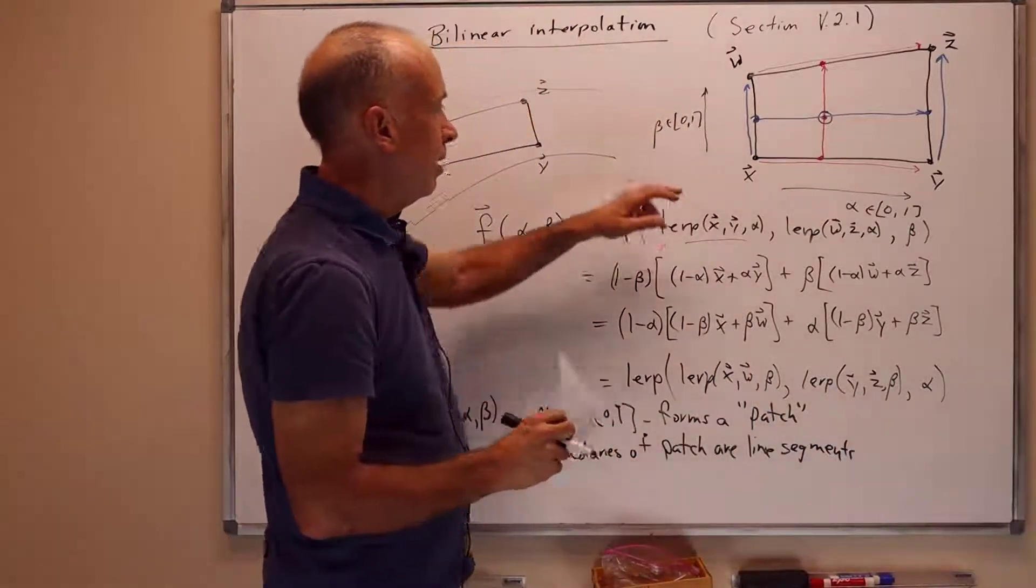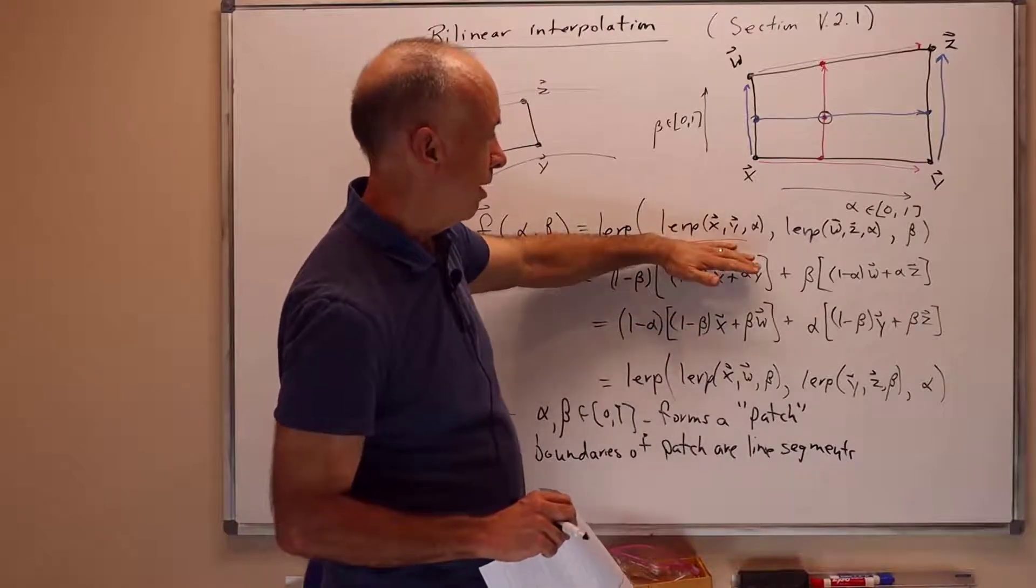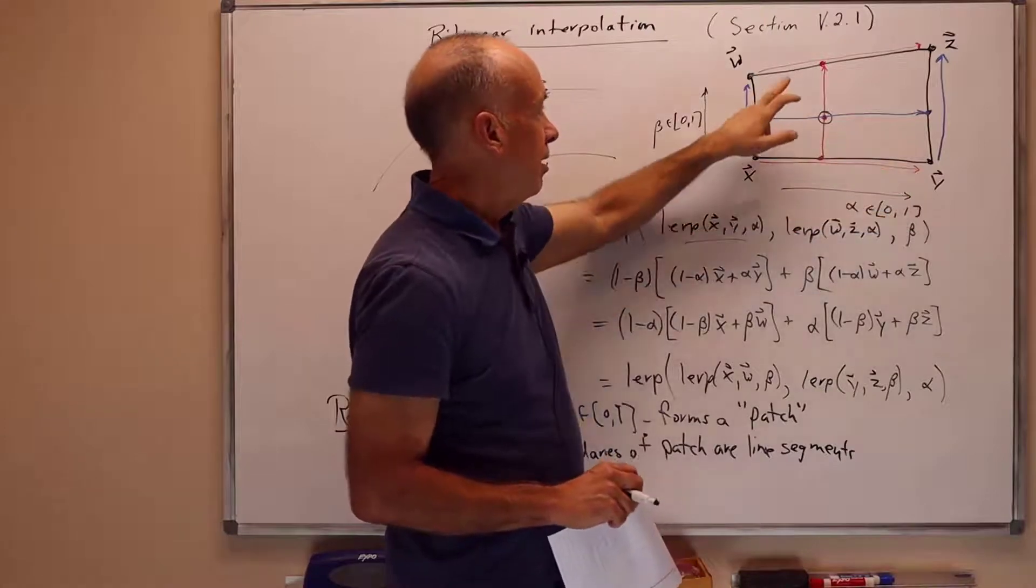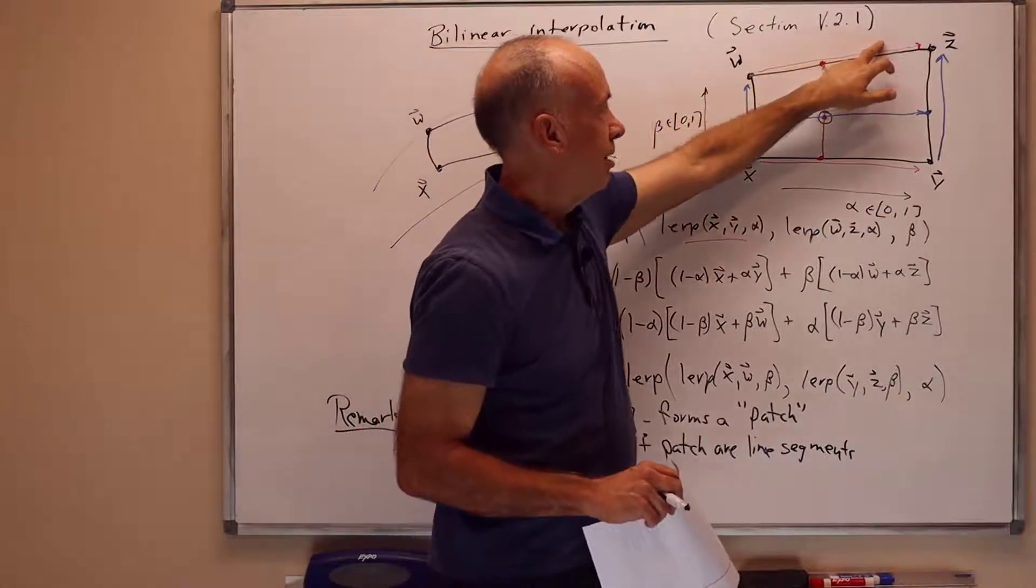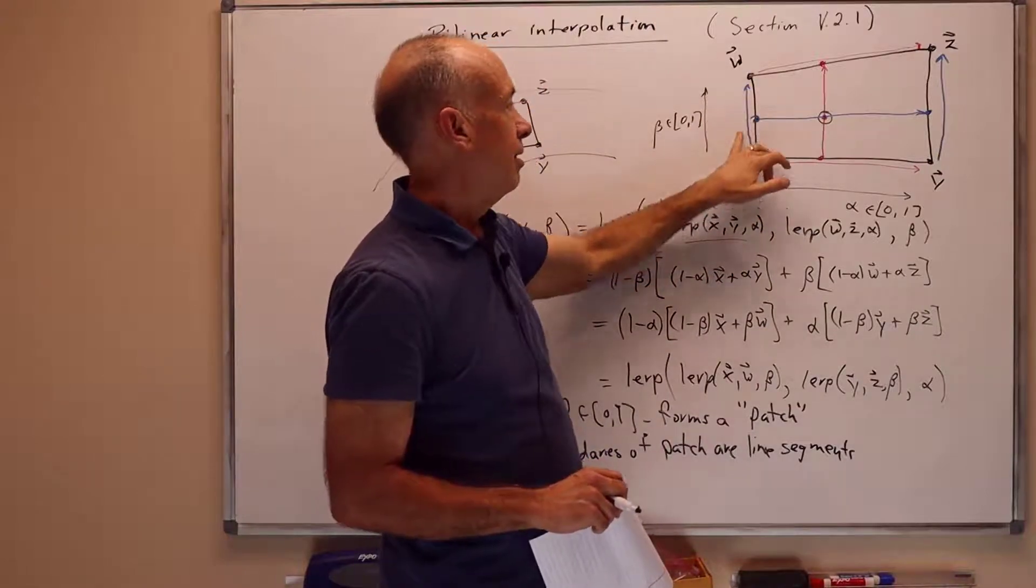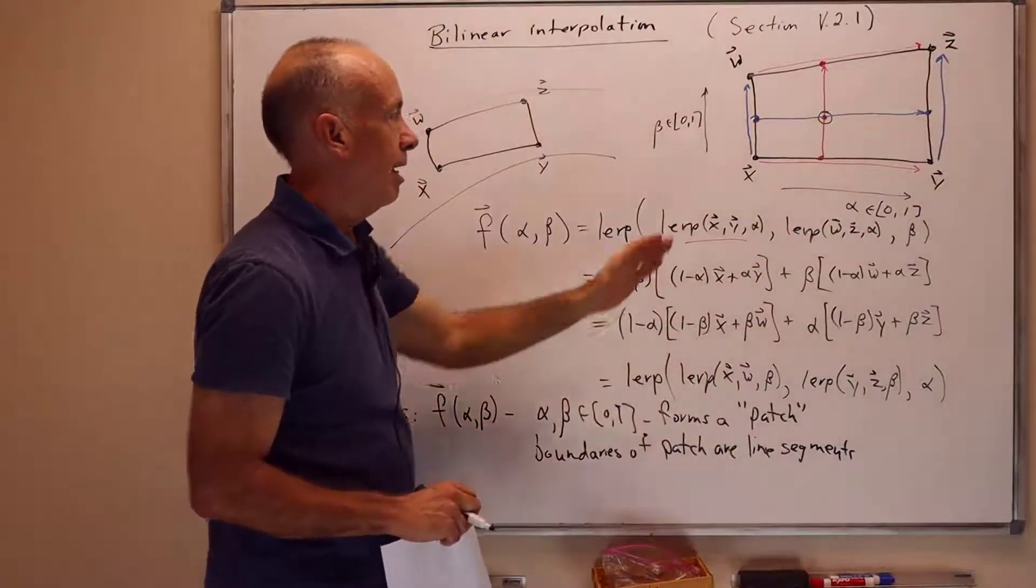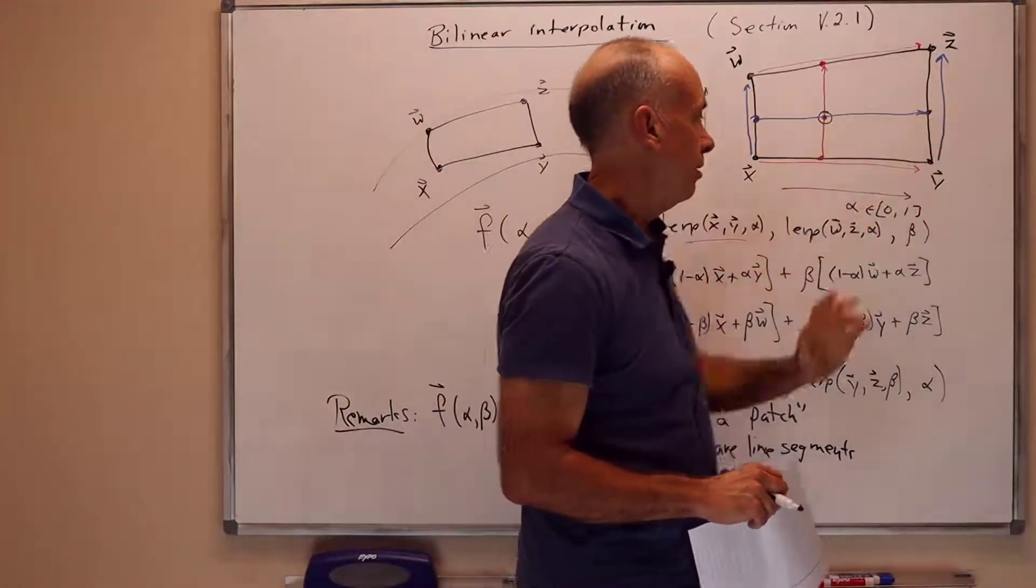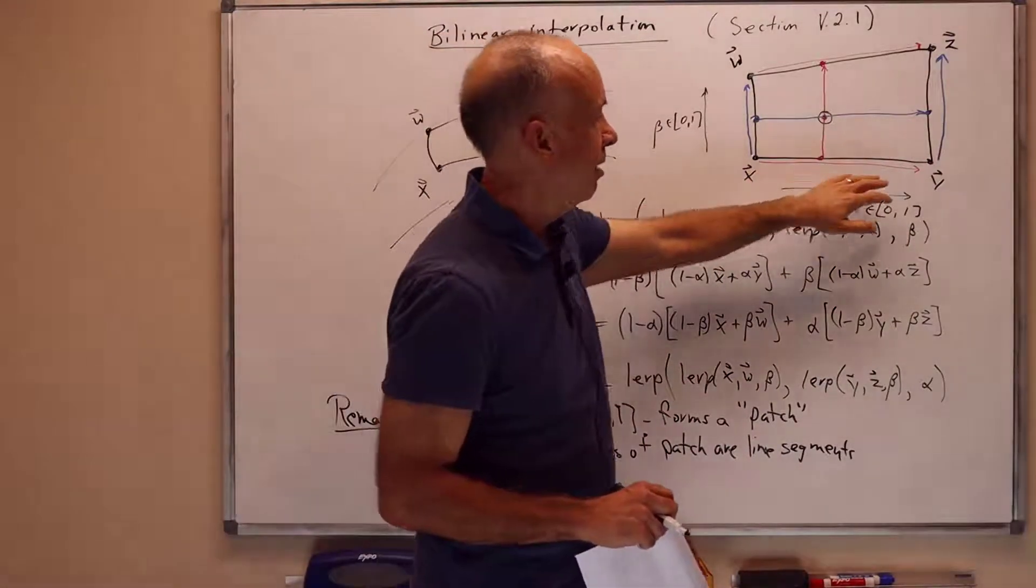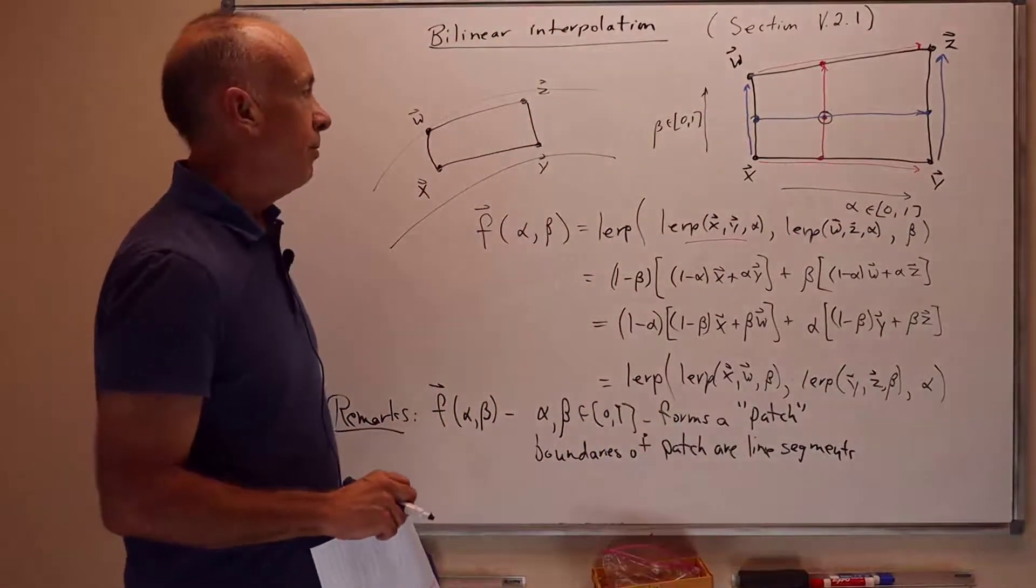Why? Because when beta equals 0, what you're getting is 1 minus beta times LERP x, y, alpha. So when beta equals 0, you're just getting the bottom boundary. When beta equals 1, you're just getting the top boundary. When alpha equals 0, you're LERPing with beta, and you're getting the boundary on the left. And when alpha equals 1, you're getting the boundary on the right. So alpha equals 0 on the left, alpha equals 1 on the right. And this LERPing just gives you straight line segments. So the boundaries are just the straight line segments between the four vertices on the corners.